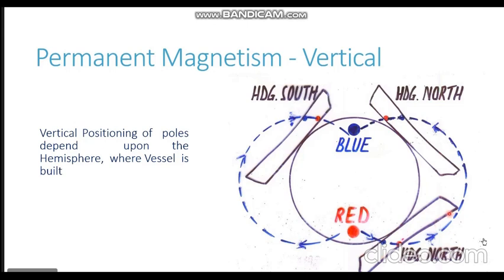Now consider a ship being built in the southern hemisphere. In the southern hemisphere, the lines of force come out of the earth's surface. They enter from the keel of the ship — giving it a blue polarity — and come out from the deck of the ship — giving it a red polarity. So any ship built in the southern hemisphere will have a blue keel and a red deck, while any ship built in the northern hemisphere will have a red keel and a blue deck. Knowing the location and heading where the ship was built, you can determine the vertical and horizontal positioning of the permanent poles.